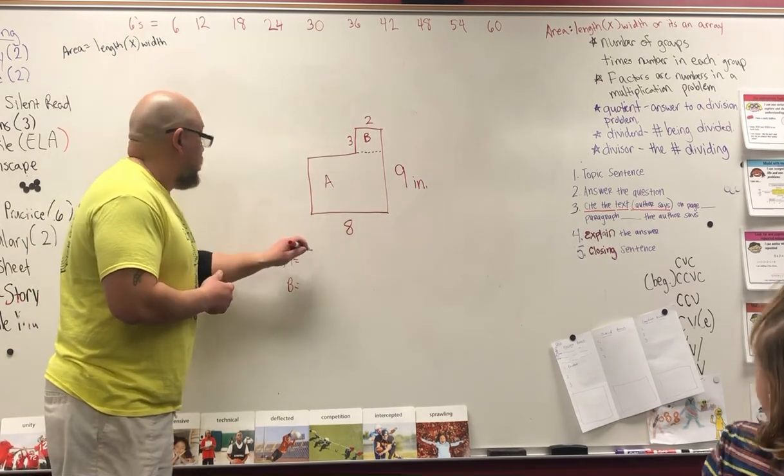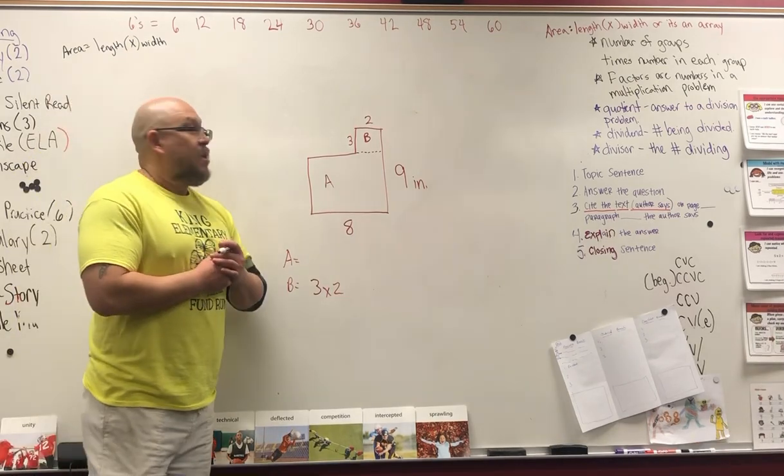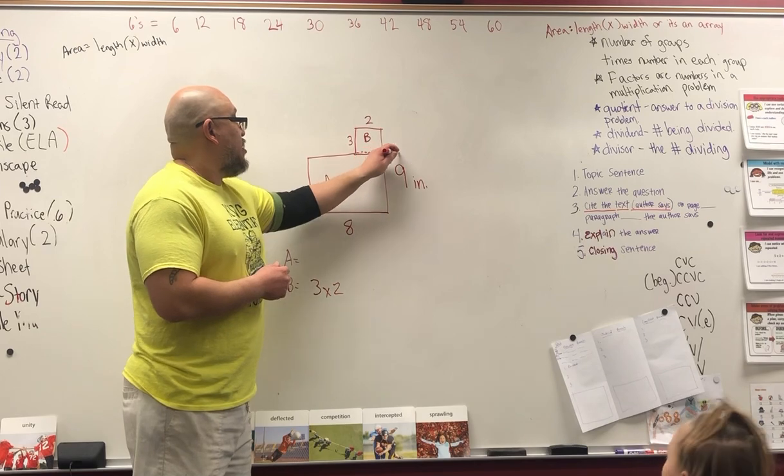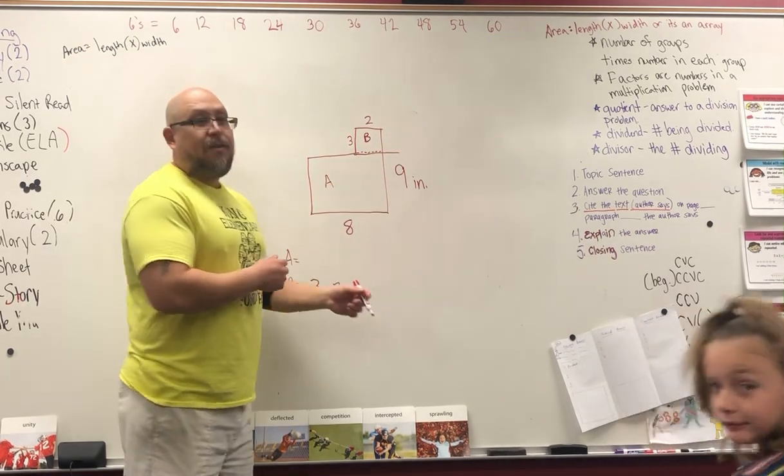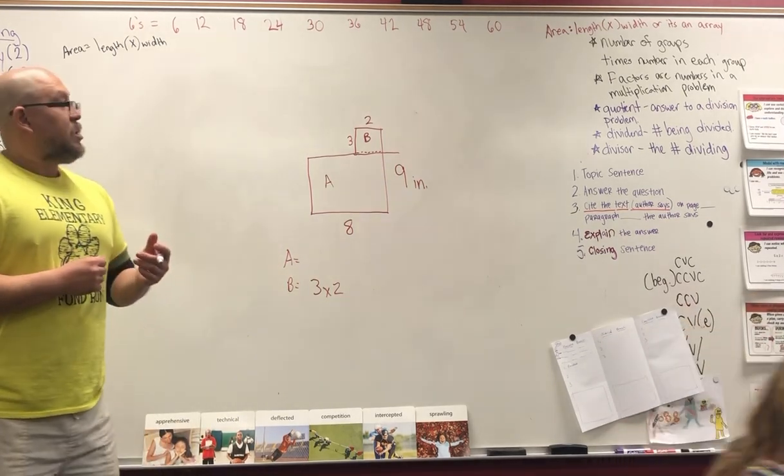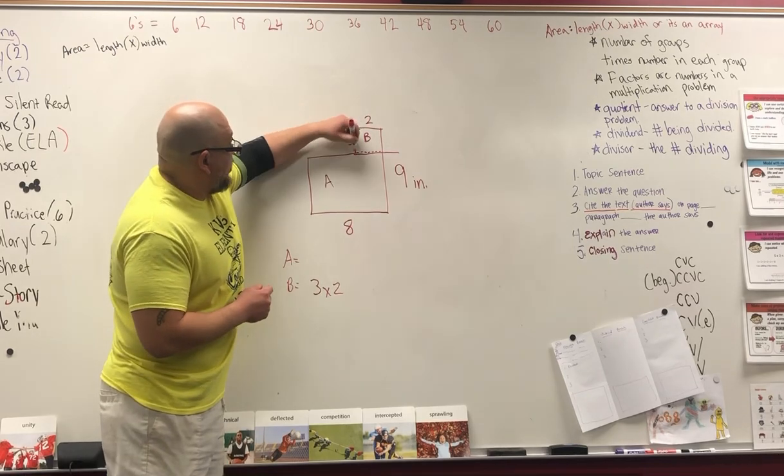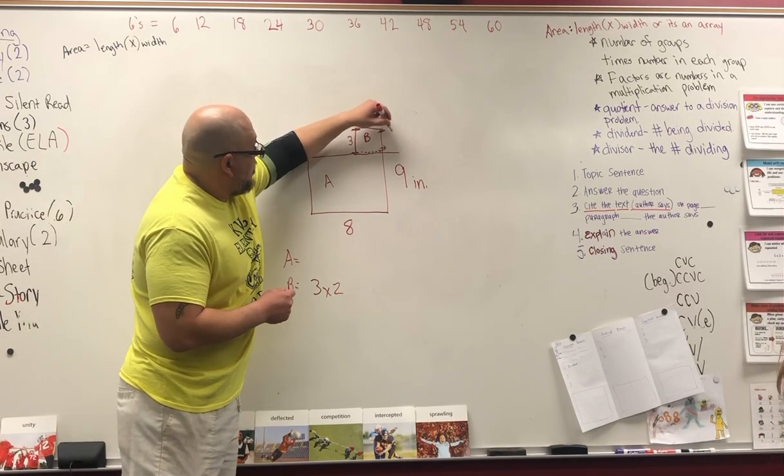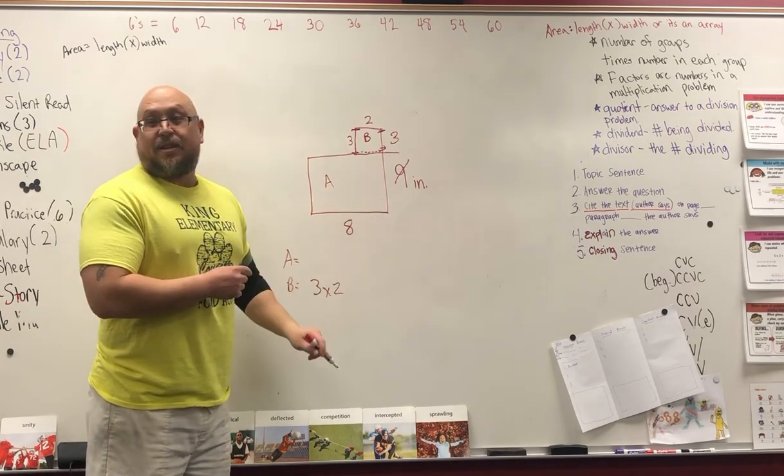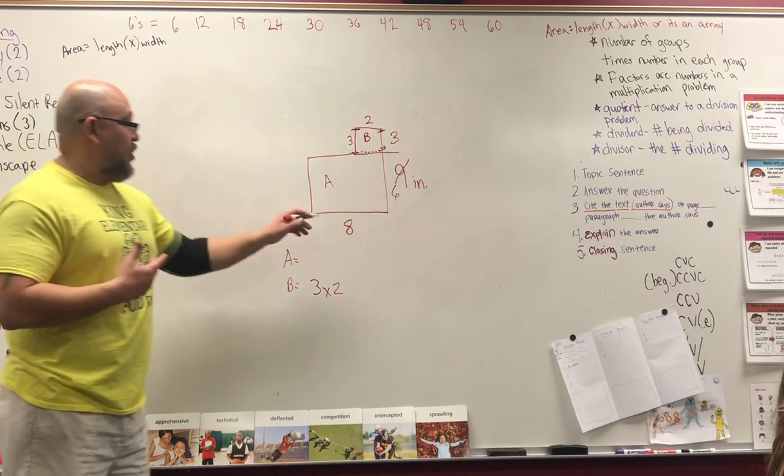Okay, so B equals three times two. Now looking at A, we know it's not nine inches because we just cut it off right there. So how do we find that out? Right, since there's a three on this side, that means this side is going to be three. So if we're taking three away from nine, what's the rest? Six. So now the area for A, width times length, is going to be six times eight.